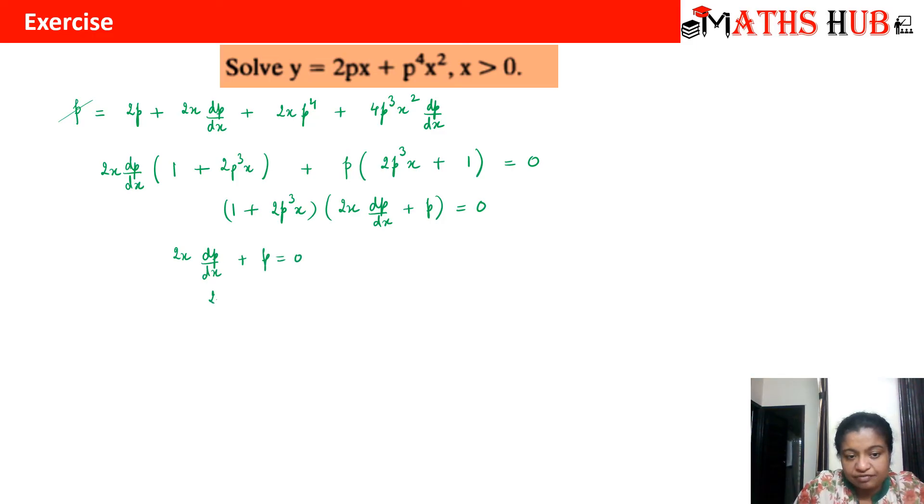We have 2x dp by dx equals minus p and I can write this as, I can separate the variables, 2dp by p equals minus dx by x. I can integrate both sides and I will get 2 log p equals minus log x plus log c.